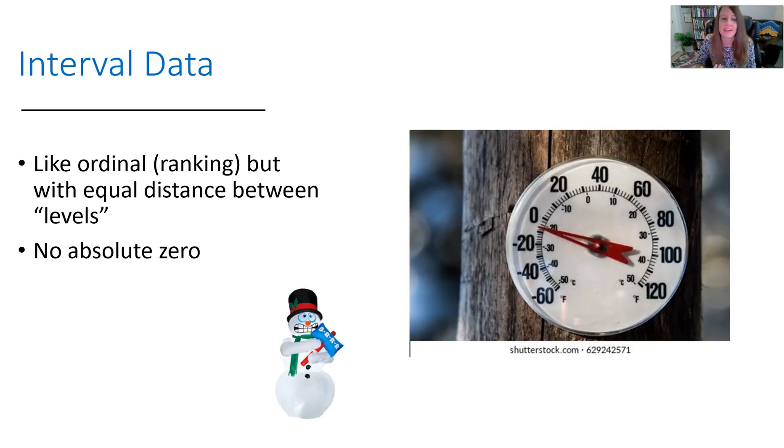Then we go to interval data. As we move forward, each of these has some of the characteristics of the preceding ones, but there's a differentiation. With interval data, it's kind of like ordinal in the sense that there is a ranking, but there is very equal distance between each level or data point. The other key feature is that there is no absolute zero.